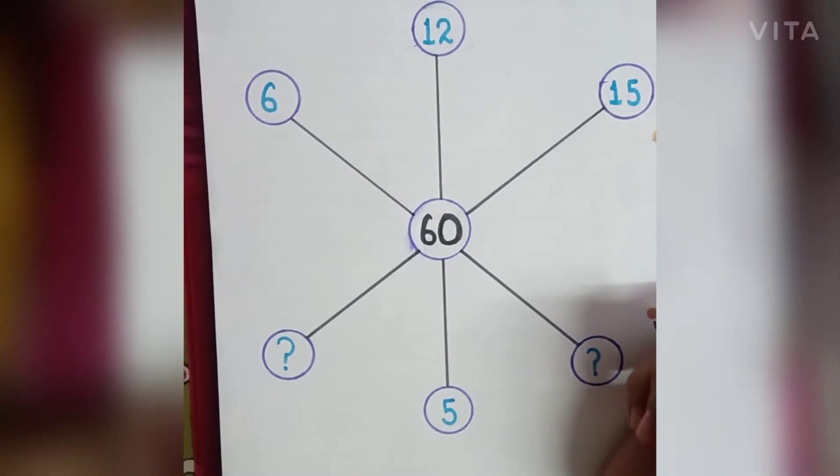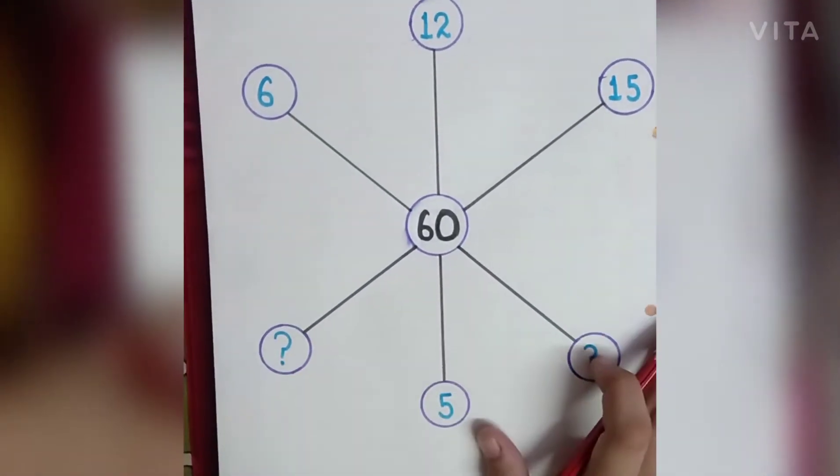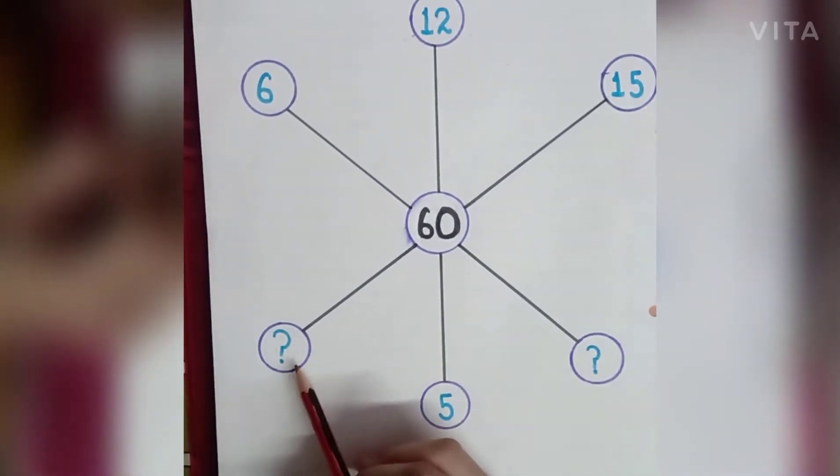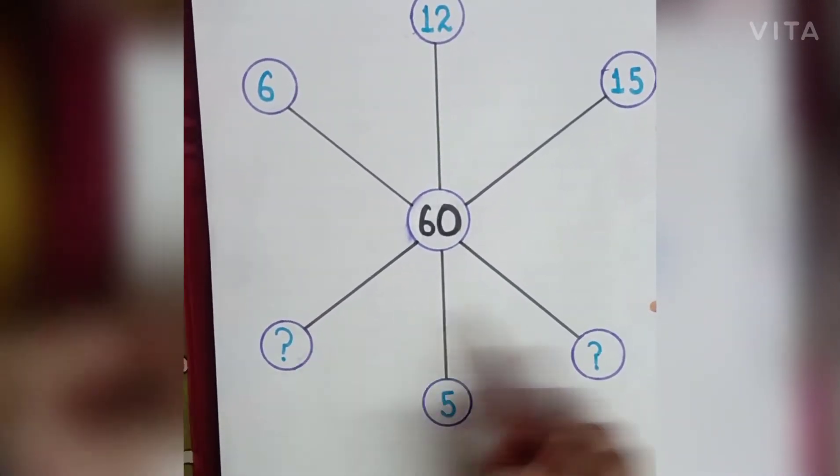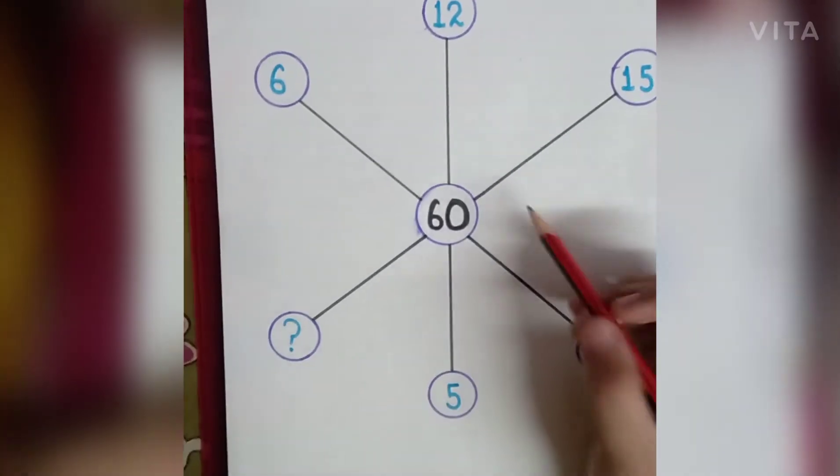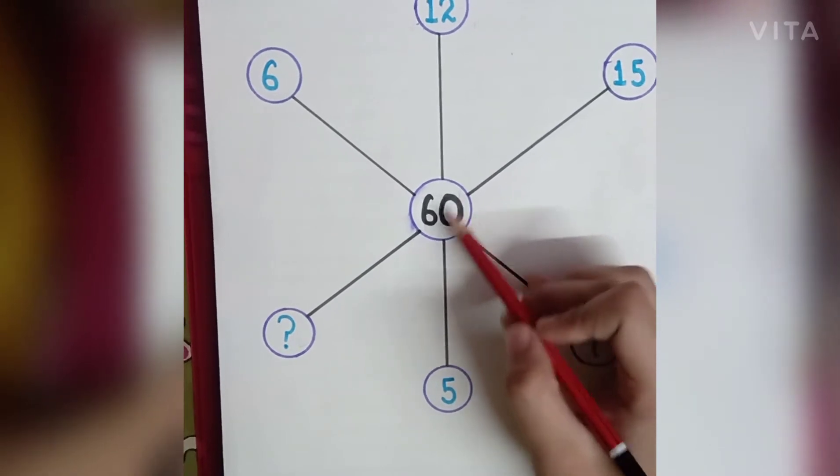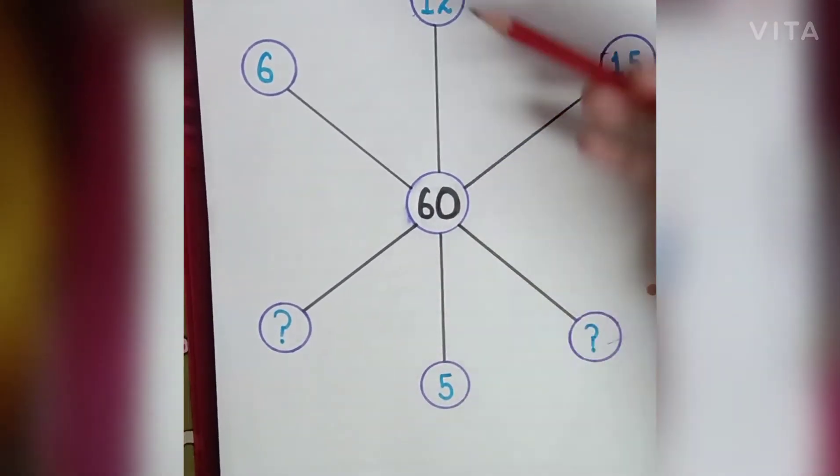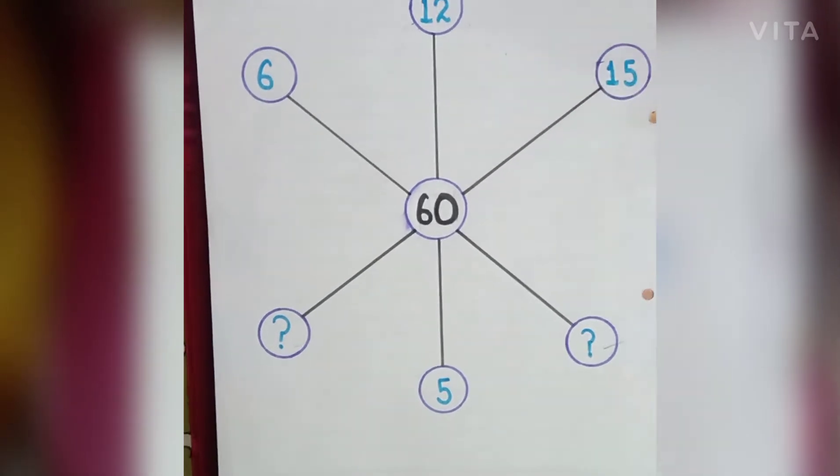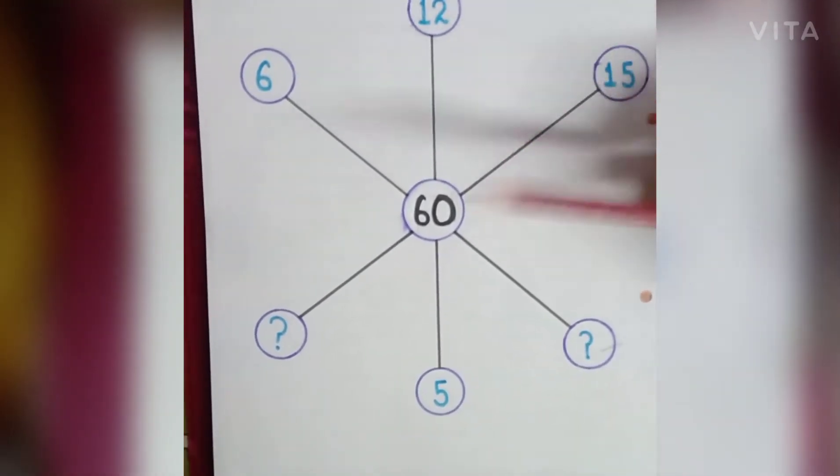Hello everyone, so today we are going to do a logical question which is this one. In this you can see you are given with two question marks. You have to fill the value over here. In the middle you are given with the number 60. Let me explain you very firstly. If you want to give the answer, then you can even pause the video and give the answer.